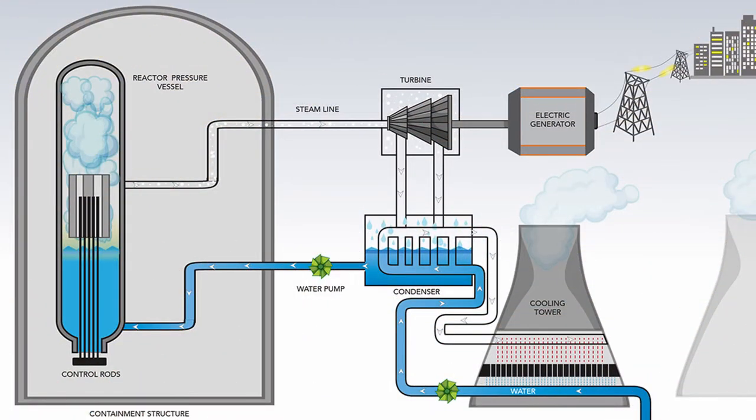Let's look at a practical example in a nuclear power plant. In the nuclear power plant there is the reactor with the control rods, fuel containers, and then the turbines which power the entire city.